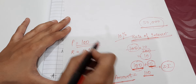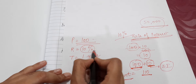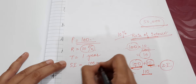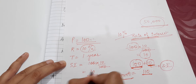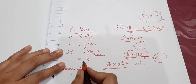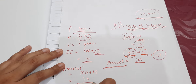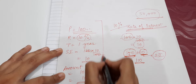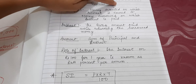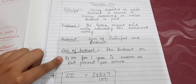For example, borrowing 100 rupees (principal) for one year at 10% rate of interest: simple interest = 100 × 10 / 100 = 10 rupees. So the amount to return is 110 rupees. In summary: principal is the money borrowed, rate of interest is always a percentage, and time is always expressed in years.